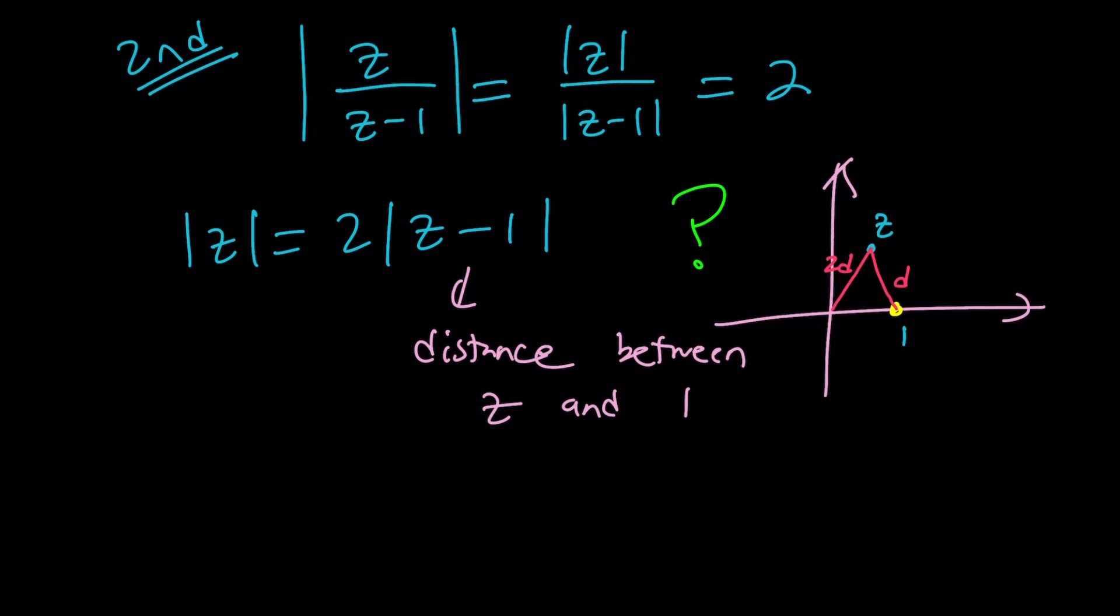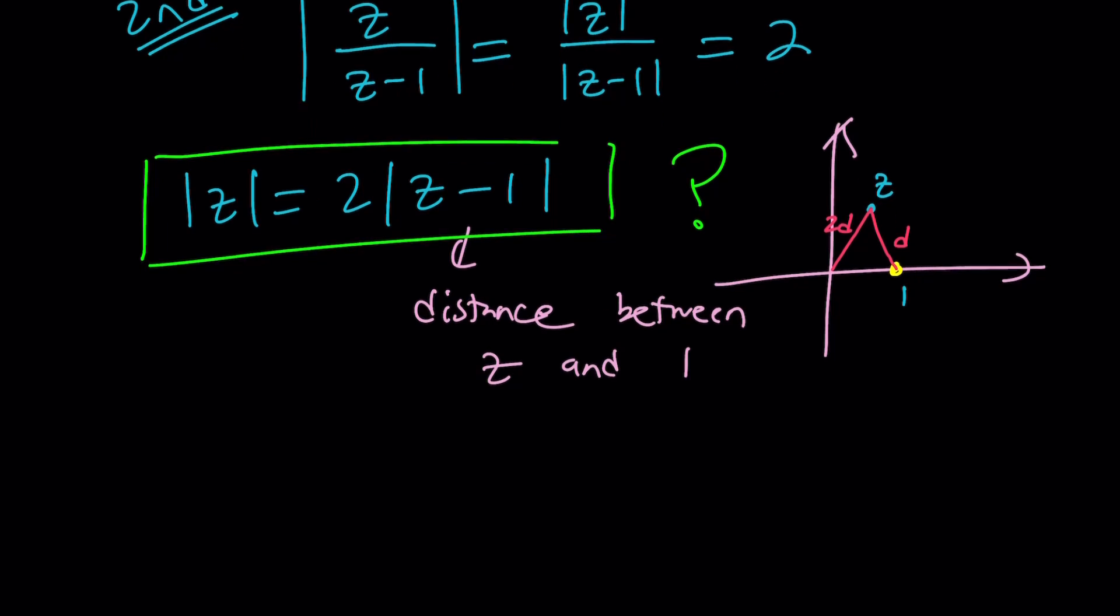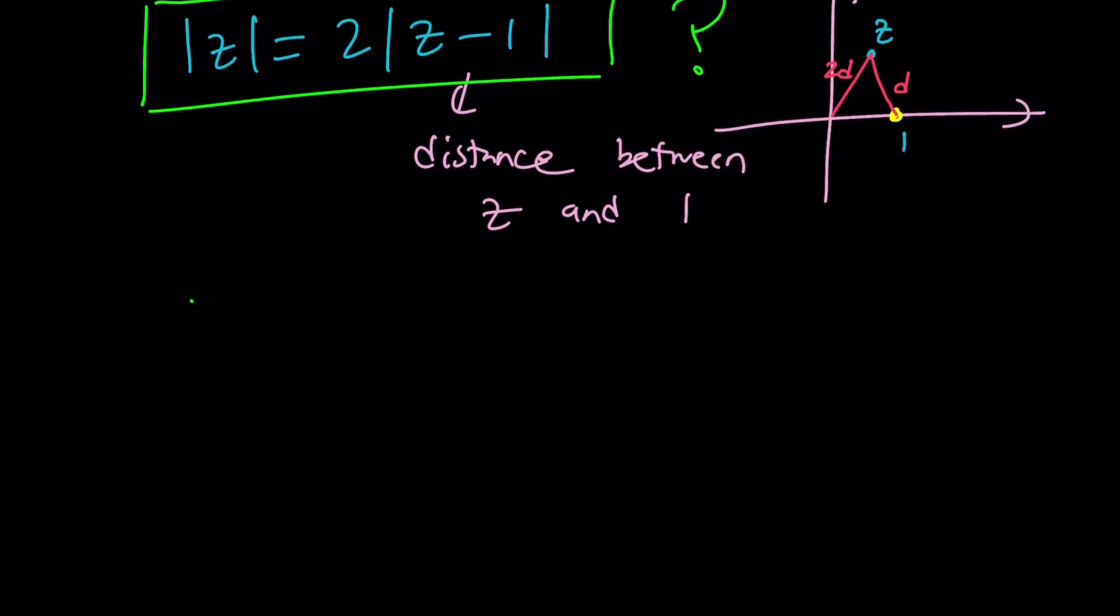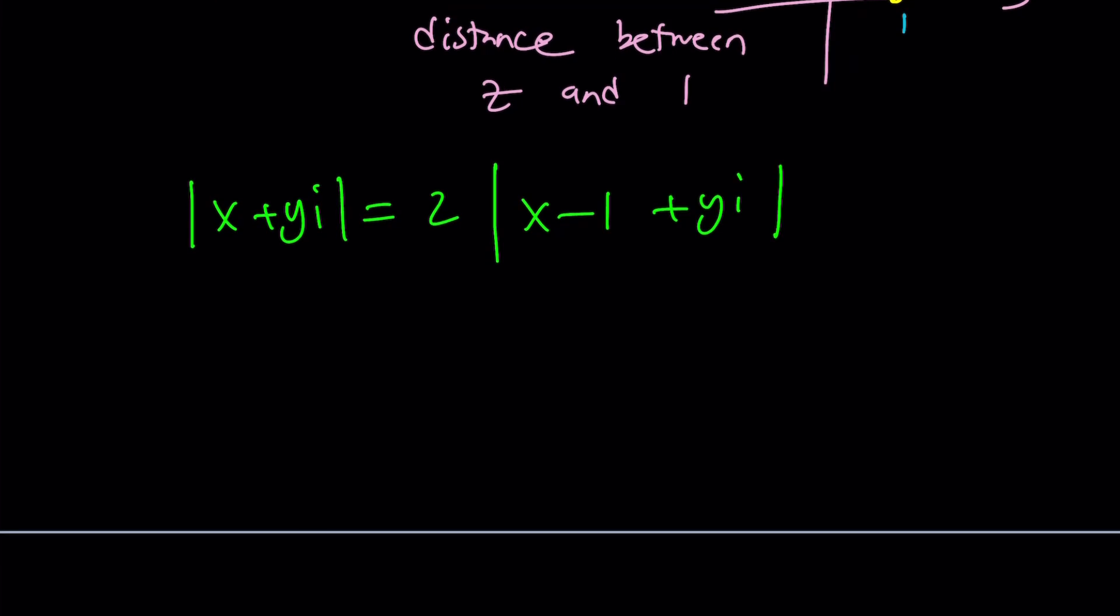Okay, ready? So, now, since we've gotten to this point, we can go ahead and actually use our old trick, replacing z with x plus yi, and then here it's going to be x minus 1 plus yi. It's the same thing, but much simpler because we separated the absolute values. We don't want to do the absolute value of a quotient. That's going to be very messy. So, now, we get the following. Square root of x squared plus y squared equals 2 times the square root of x minus 1 squared plus y squared.